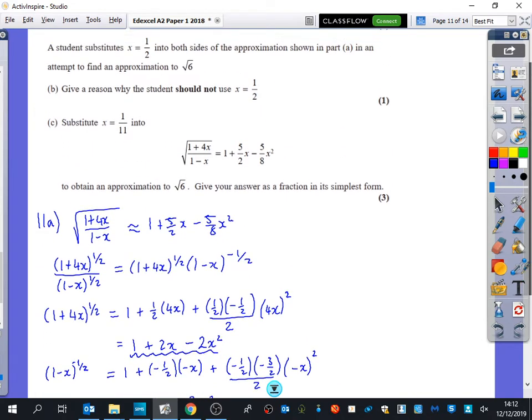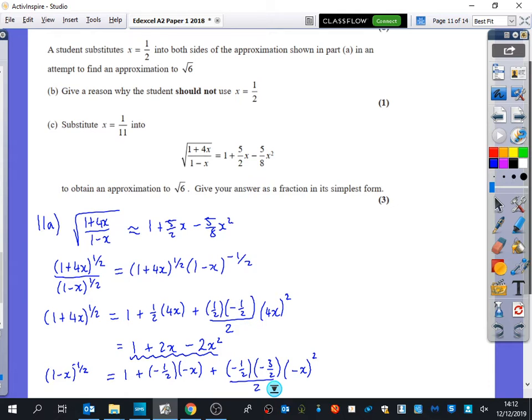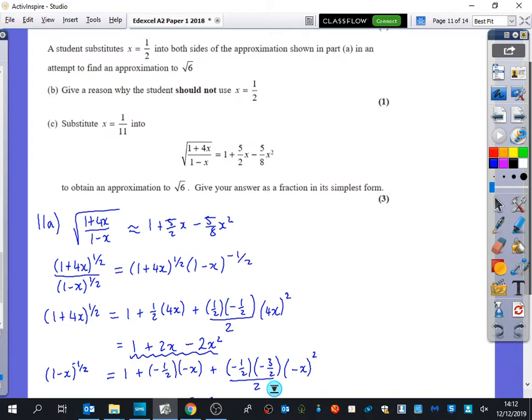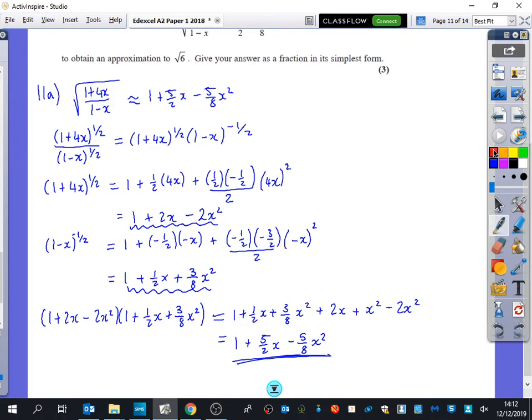It then says a student substitutes x equals a half into both sides of the approximation shown in part a in an attempt to find an approximation to the square root of 6. Give a reason why the student should not use x equals a half. Well you should know when we do these binomial expansions that this thing here is only valid if it's between 1 and minus 1. So we're actually saying that 4x is only going to be valid this expansion if 4x is between 1 and minus 1 meaning it's only valid when you divide these by 4 if x is between a quarter and minus a quarter.